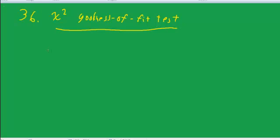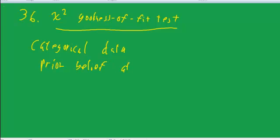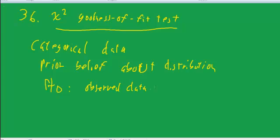The idea is you have some categorical data. You have some prior belief about the distribution of that data. And the null hypothesis is that your observed data fits your prior expectation. And the alternative is it does not fit.